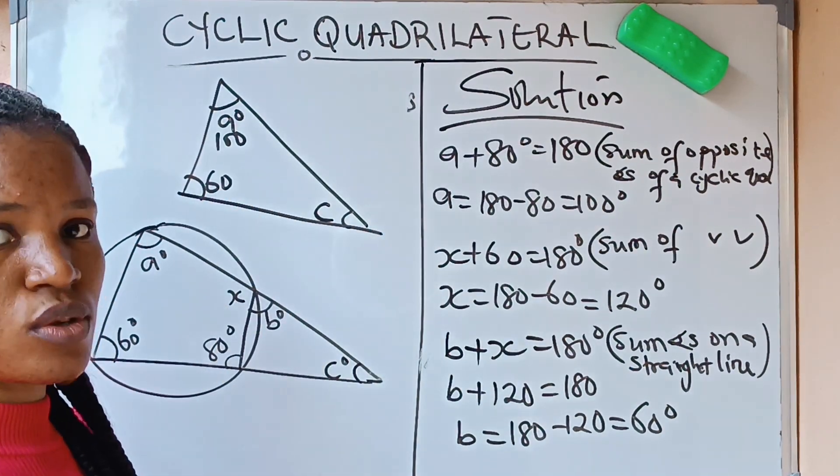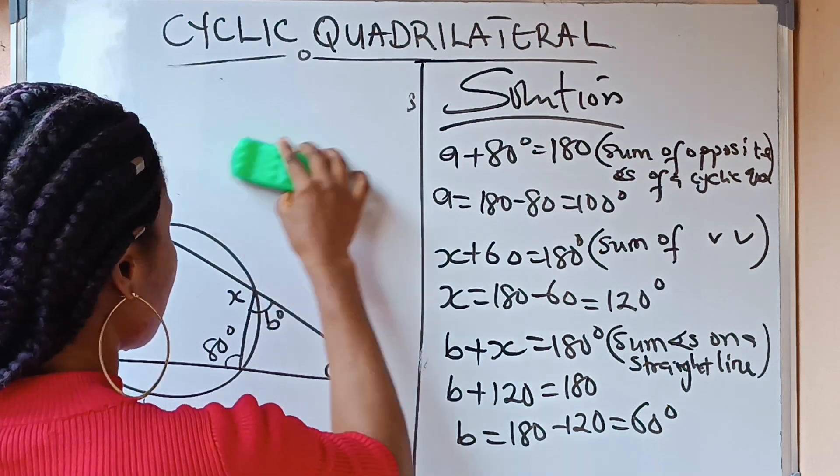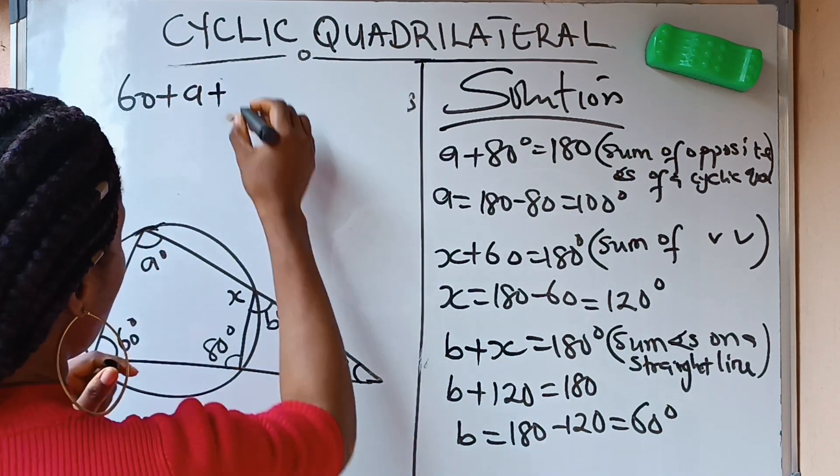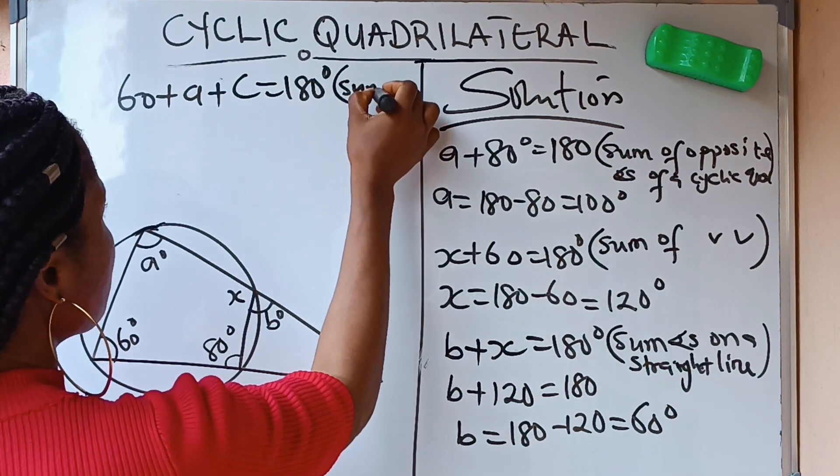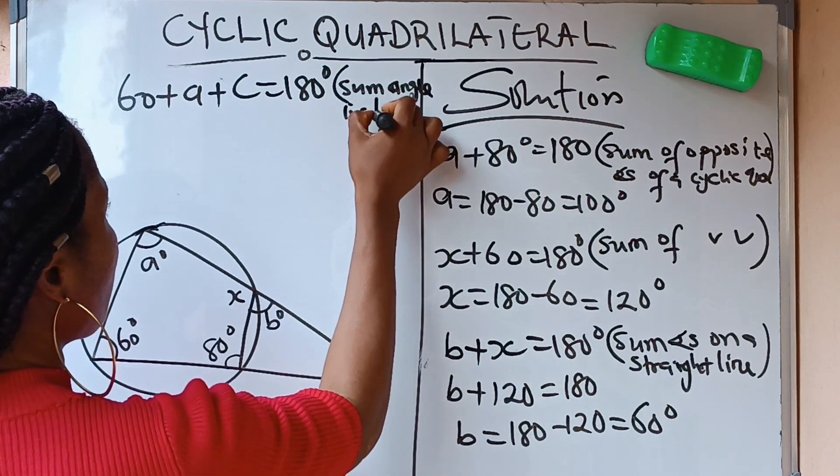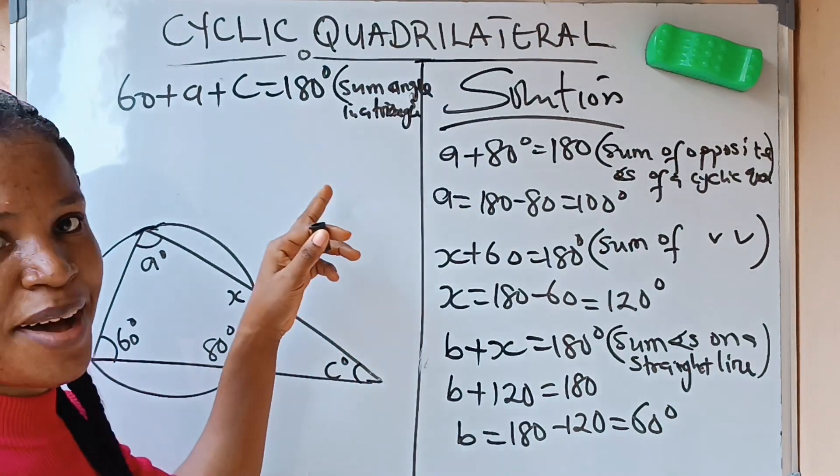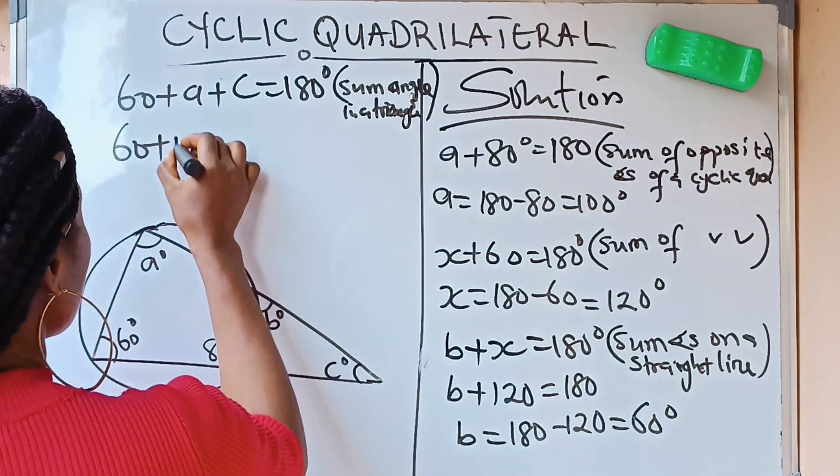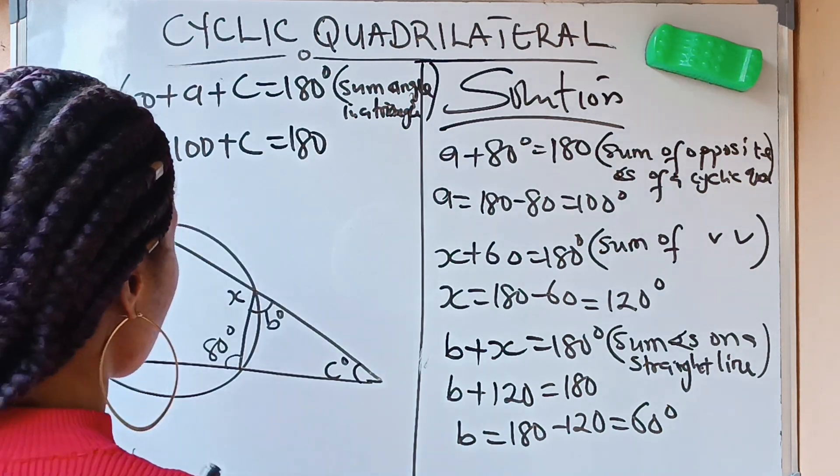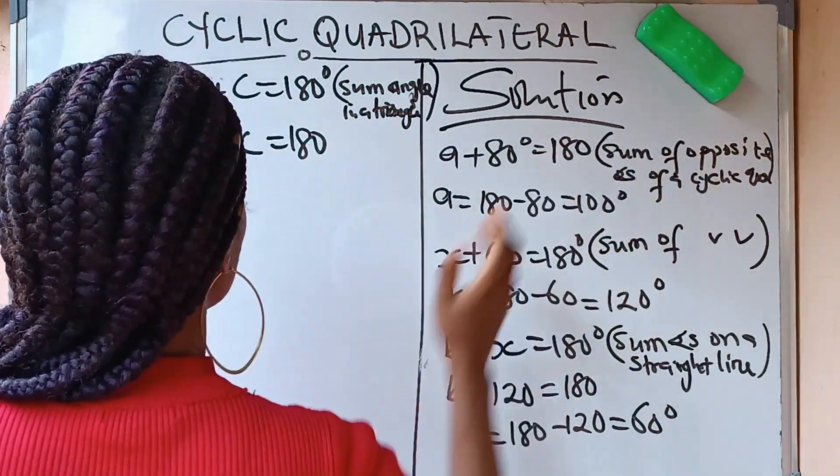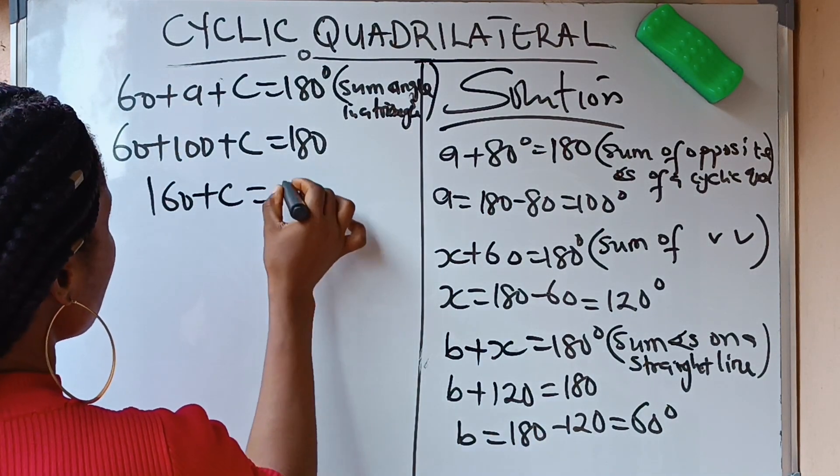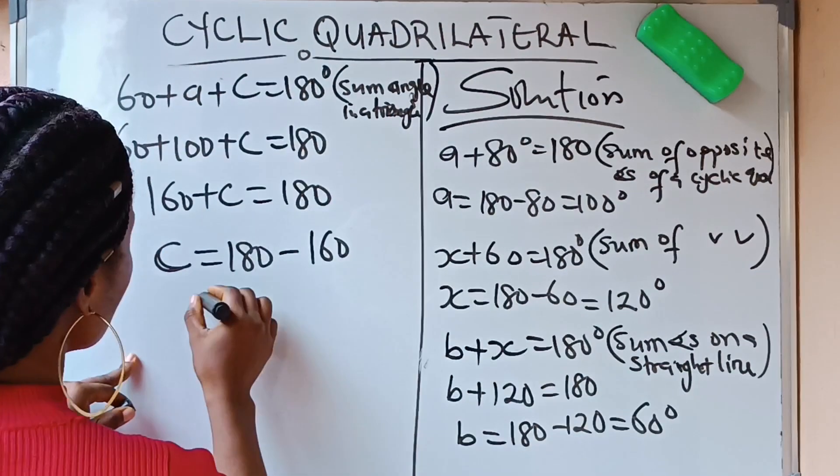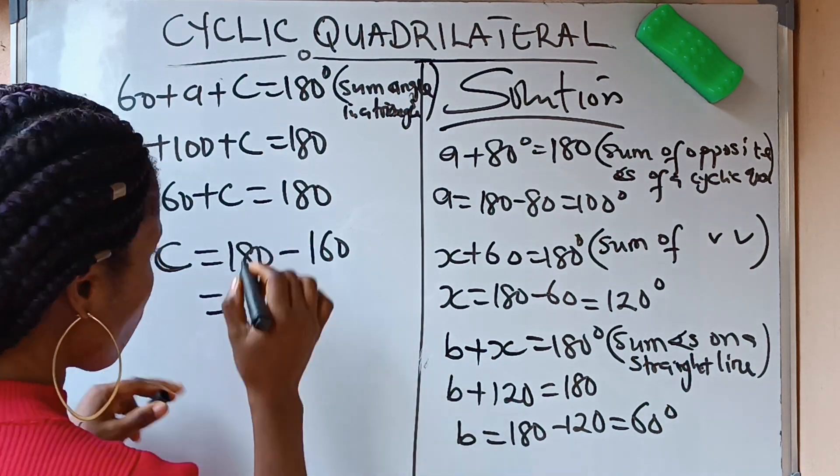And we have gotten our A already to be 100. So if we have 100 here and we have 60 here, we can easily get our C. Because sum of angle in a triangle is supposed to give us 180 degrees. So I can now write that this 60 here, 60 plus this A here, plus this C here, is equal to 180 degrees. Reason is sum of angle in a triangle. We have 60 plus... What is our A? Our A is 100. 100 plus C that you are looking for is equal to 180 degrees. 60 plus 100 is going to give us 160. Plus C is equal to 180. That means our C is what? 180. This will cross over to become minus 160. So it means that C is equal to 180 minus 160. Our C is equal to 20 degrees.